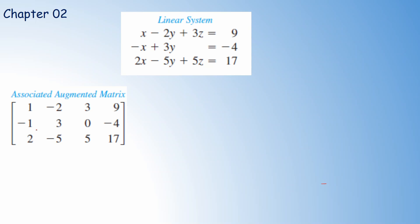What we are going to do is make the left-hand side of this augmented matrix into upper triangular form. That means in the main diagonal we have non-zero entries, and all entries below the main diagonal should be 0. We apply elementary row operations to obtain the upper triangular matrix.